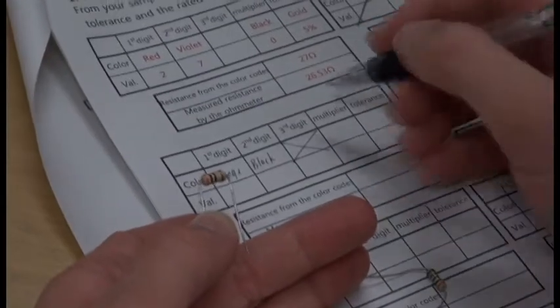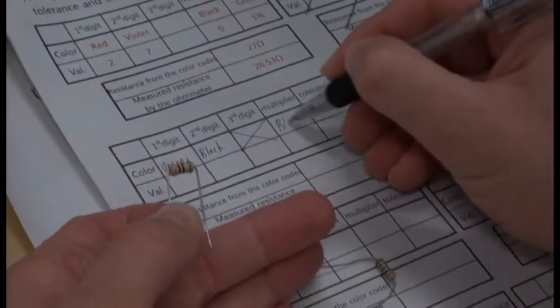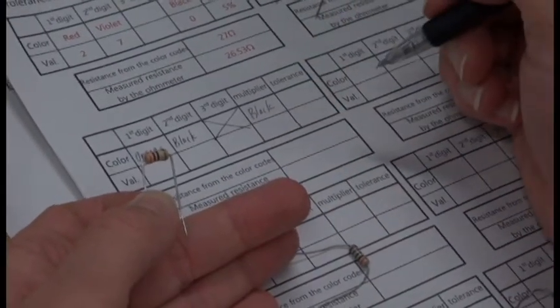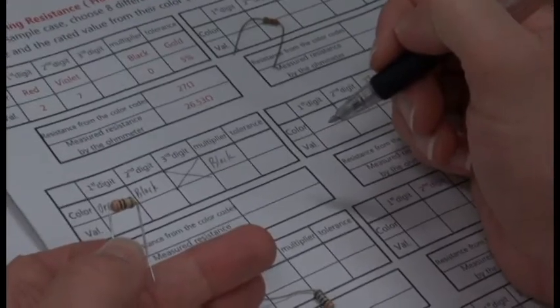This is a four band resistor, so there is no third numeric digit. So write an X. Write the color of the third stripe in the multiplier box.